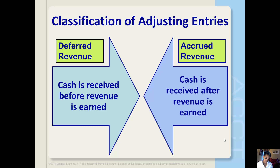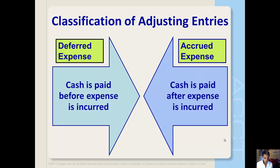When a company receives cash before it provides the service, it has a deferred revenue — like in the Circle Films example where they got paid a deposit. When a company earns revenue before it receives cash, it has an accrued revenue, as in the Circle Films example when they invoiced a customer. When a company pays for a resource before it uses or consumes it, the company has a deferred expense, such as prepaid rent or insurance. Companies often incur expenses and pay for them later; when this occurs, the company has an accrued expense, such as accounts payable.